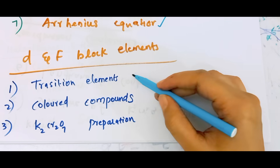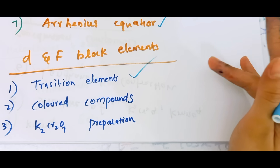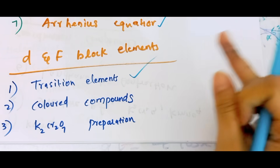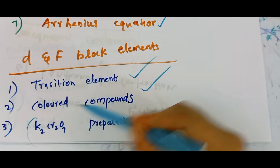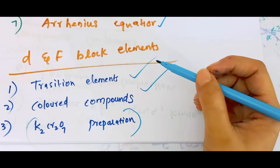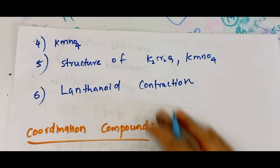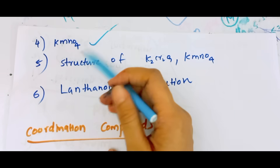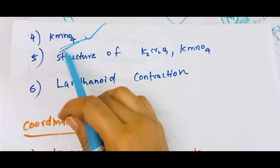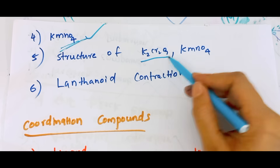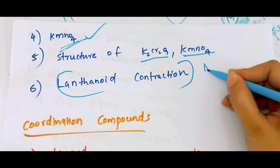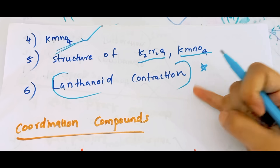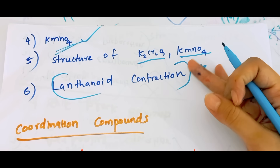In the chapter, we will see the transition elements. The properties of the D and F block elements. The CrO4^2- front. What is the structure of K2Cr2O7? The KMnO4 construction. The permanganate. The KMnO4 structure — you can see it.